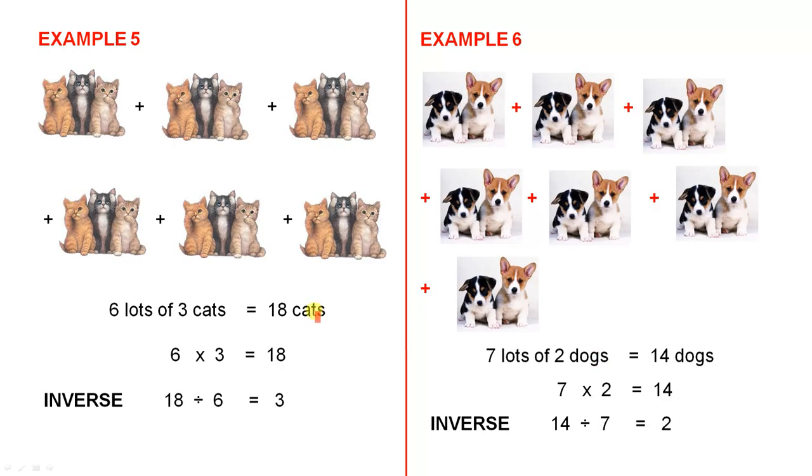Example 5. Six lots of three cats. That gives you 18 cats. Six threes are 18. Eighteen divided by six, which is the number of groups, gives you three, which is the number of cats in each group. Division undoes multiplication.